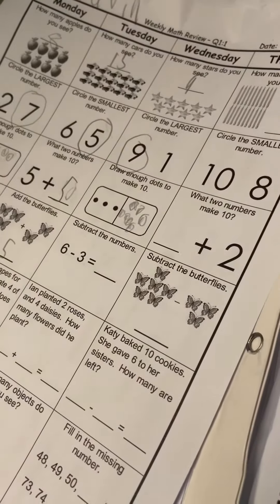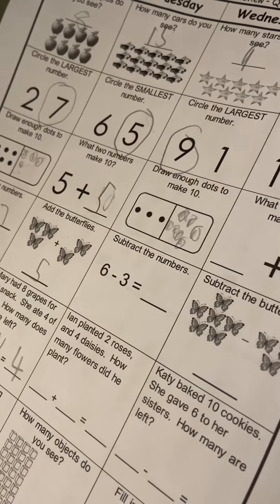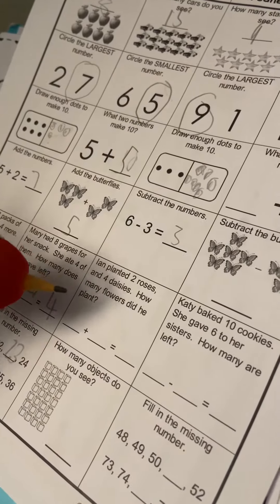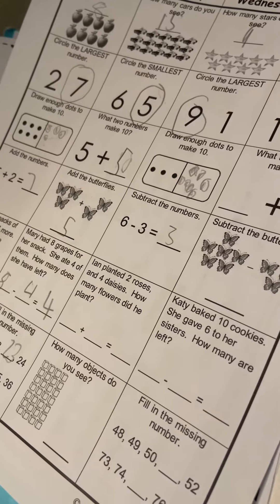Six minus three. I know it's easy. Three. Let's see. Aron planted two roses and four daisies.